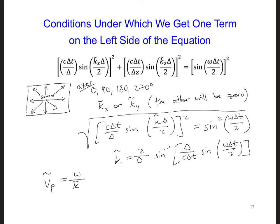So now if we evaluate k tilde and plug it into this equation, we can get a value for the numerical phase velocity in our two-dimensional grid along an axis.